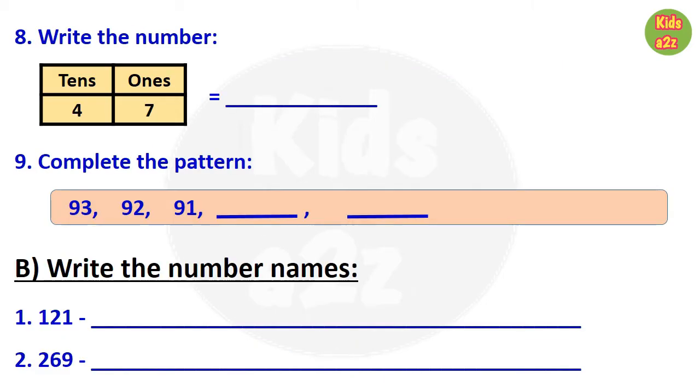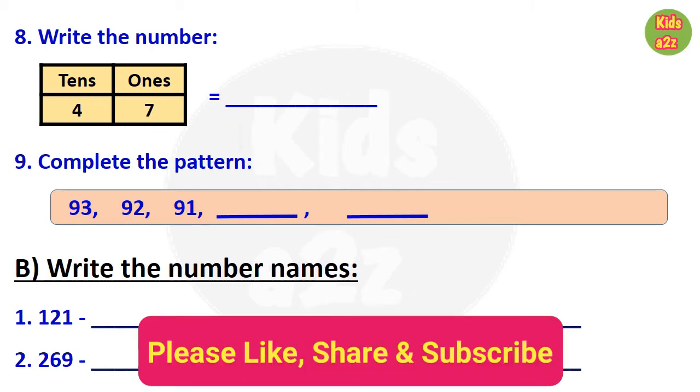Question number 8: here kids need to write the number. We can see in the question the number is 4 tenths plus 7 ones. That is 47.